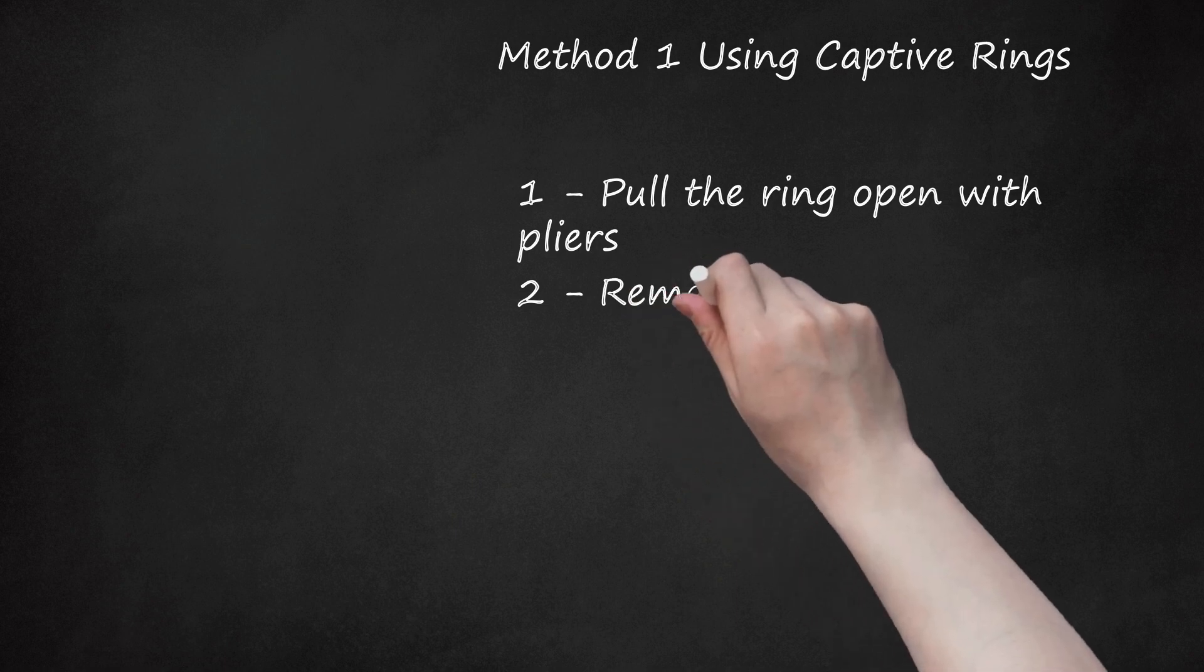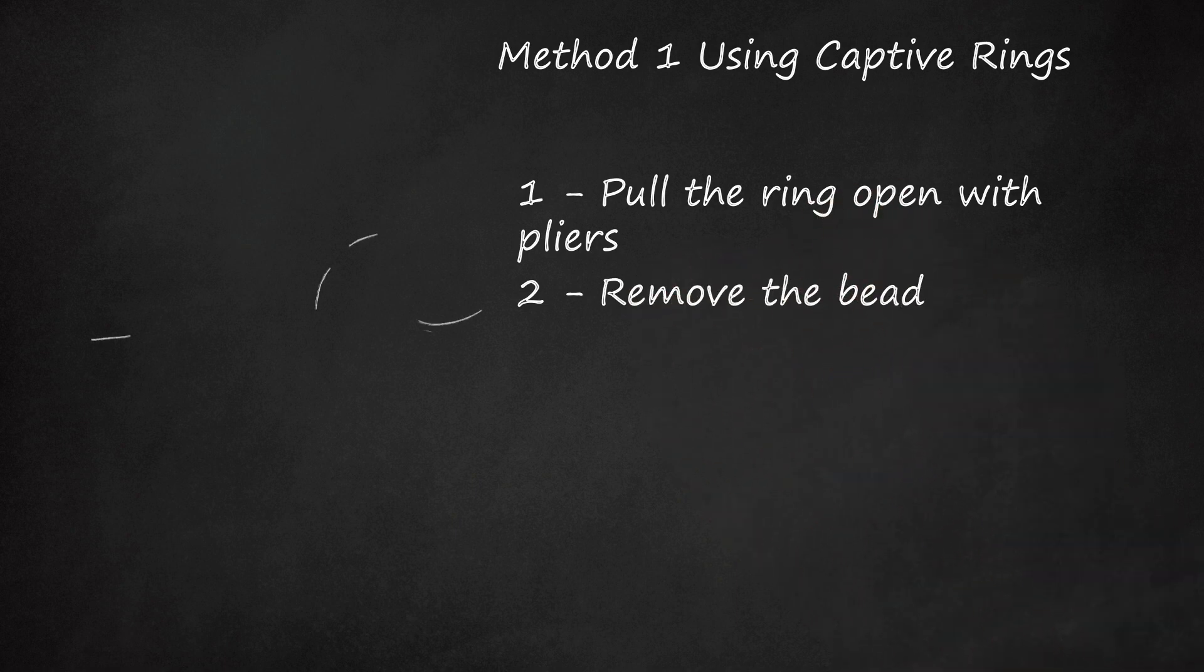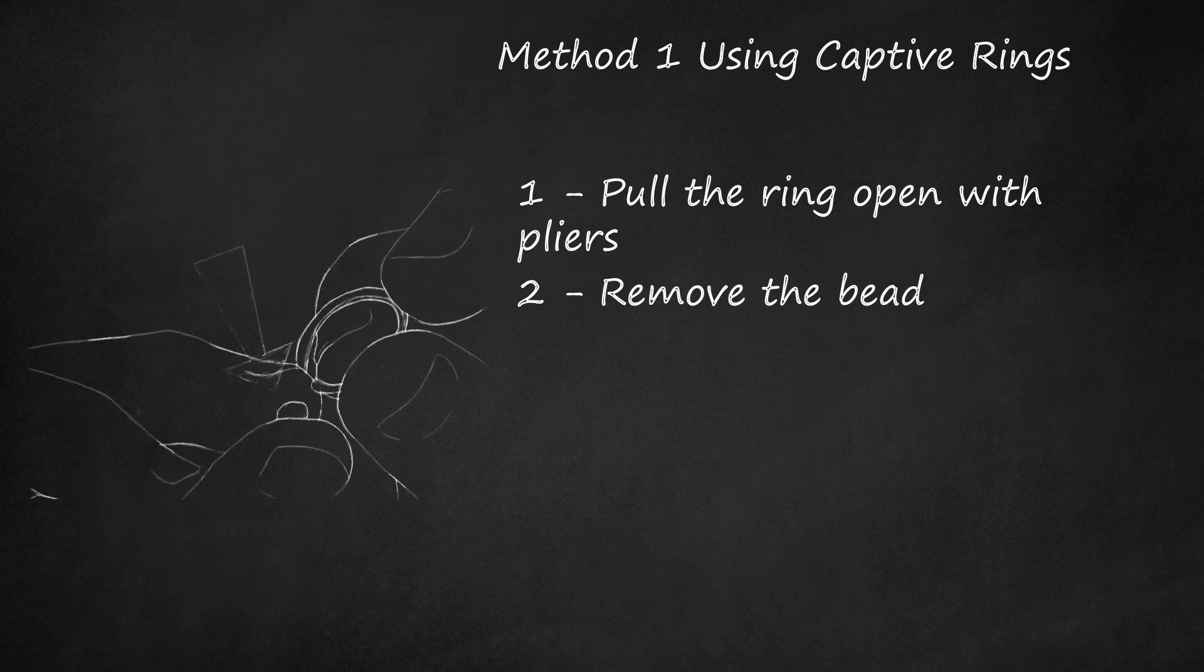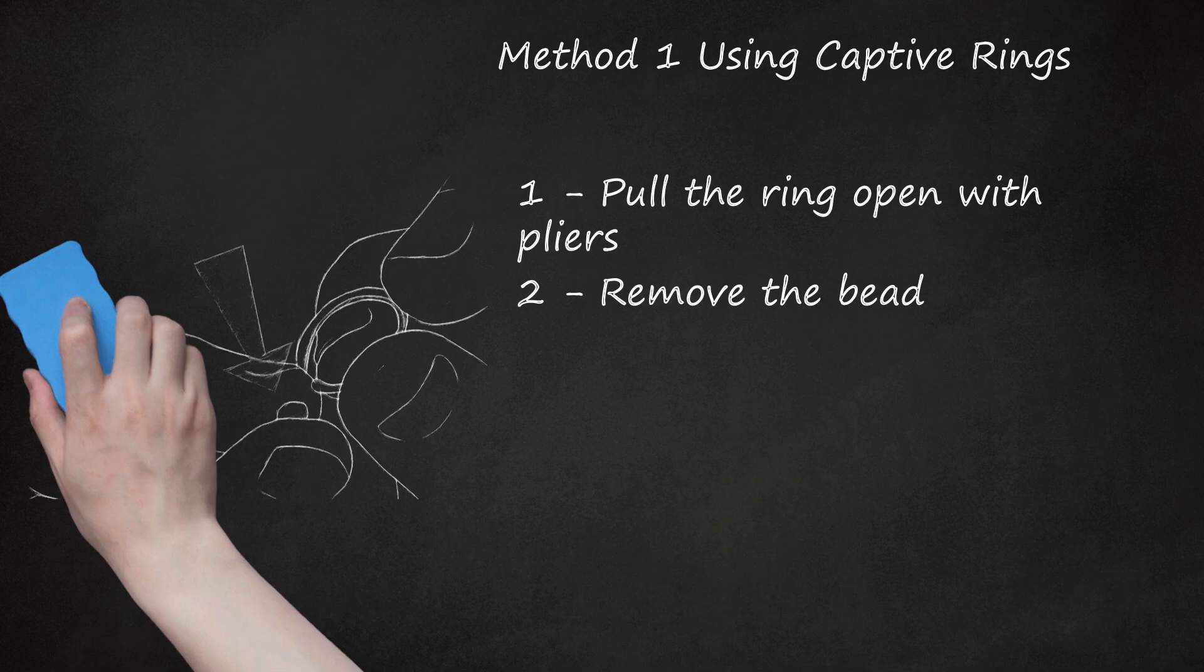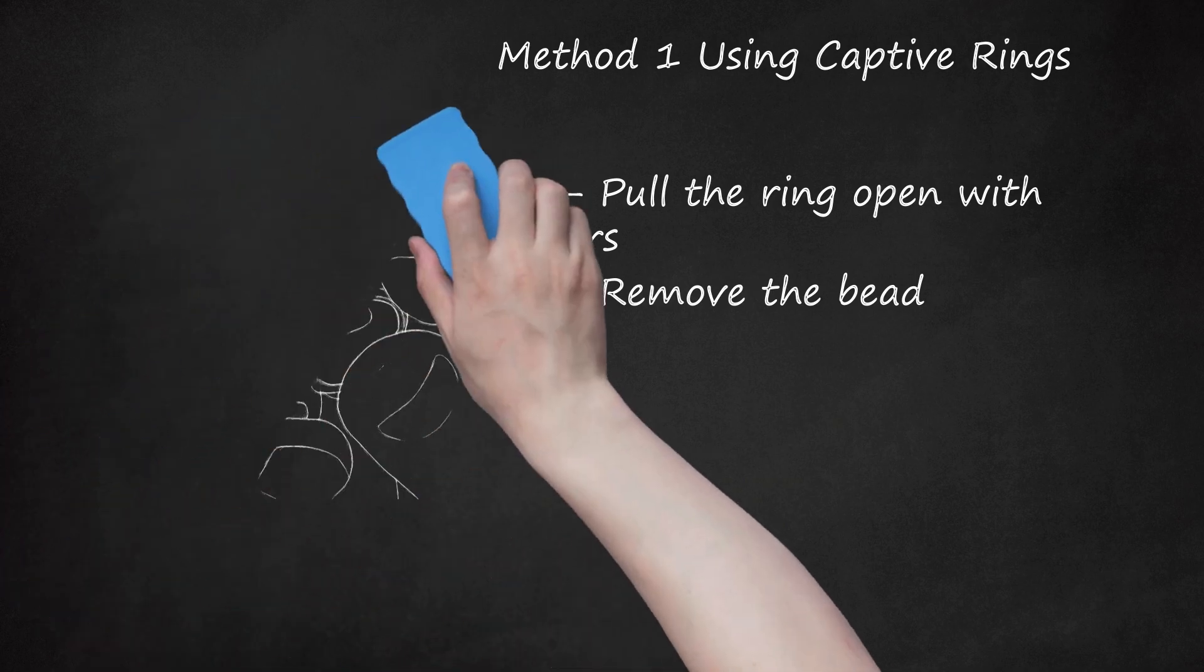Step 2 - Remove the bead. The bead or ball of a captive ring is held in place using nothing but pressure. When you release the pressure on both sides of the bead, it will fall out. Hold the ring on either side of the bead. With your hands or pliers, gently pull both sides of the ring in opposite directions, pulling them apart. Avoid stretching the ring open too far, since this could make it difficult to fit the ends back together.